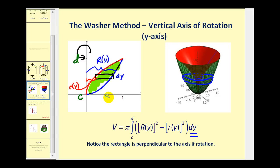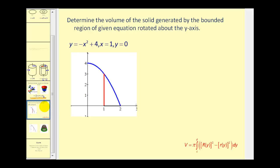When using the washer method, one of the most important things to remember is that the representative rectangle must be perpendicular to the axis of rotation. For our example, we want to determine the volume of the solid generated by the bounded region of: y equals negative x squared plus four (the blue function), x equals one (the vertical line in red), and y equals zero. We are rotating this region about the y-axis.